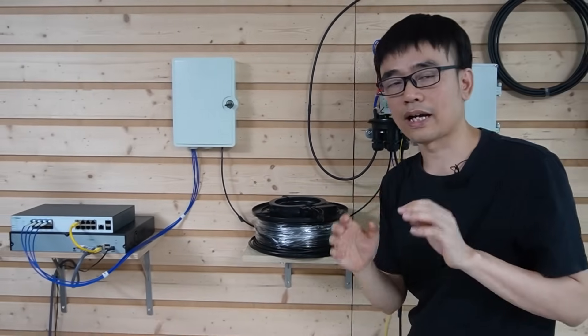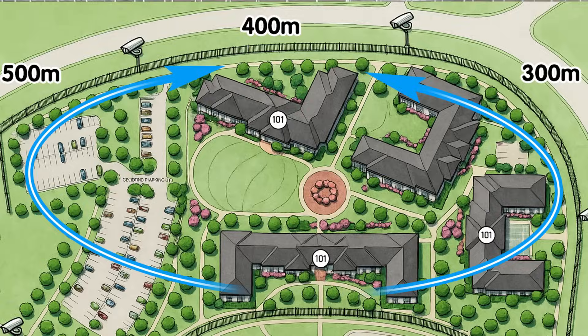In our client's setup, we need to pull fiber optic strands from the control room in both directions. One fiber optic cable can serve four outdoor PoE switches. In total, we'll have eight outdoor PoE switches in the system using two fiber optic cables.